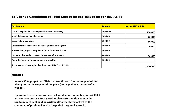In the working note: interest charges paid on deferred credit to the supplier of the plant — the plant is not a qualifying asset, so rupees 2 lakhs cannot be capitalized. Therefore, we are not going to include this as a capitalized cost.